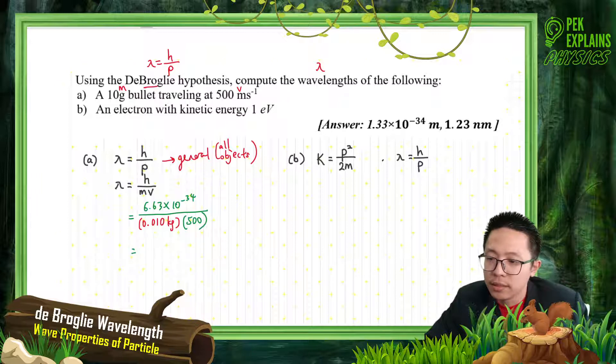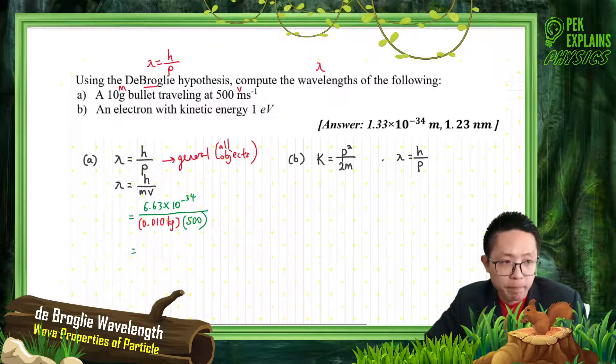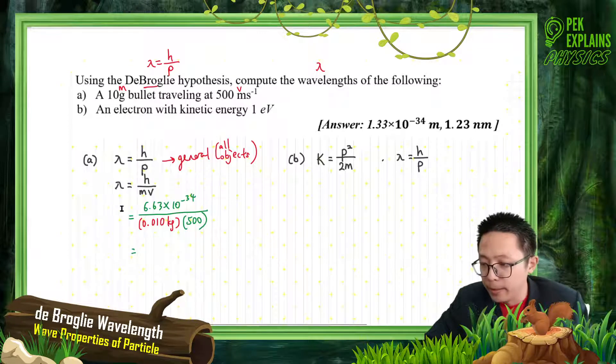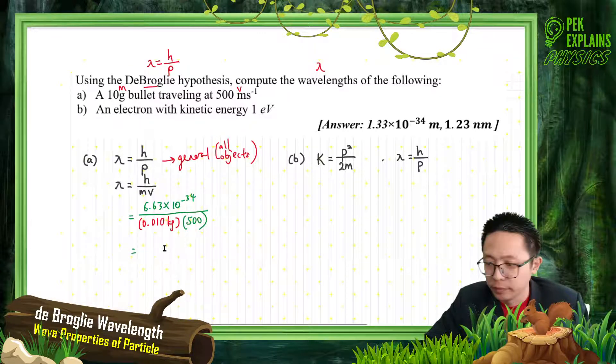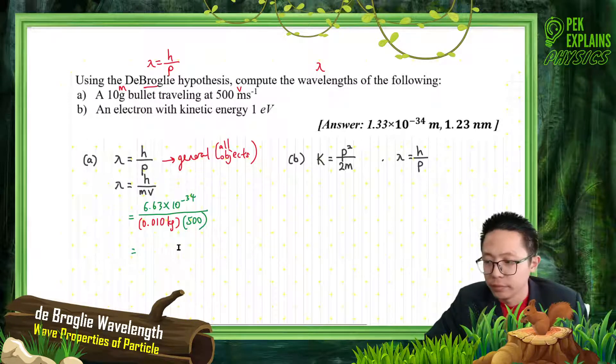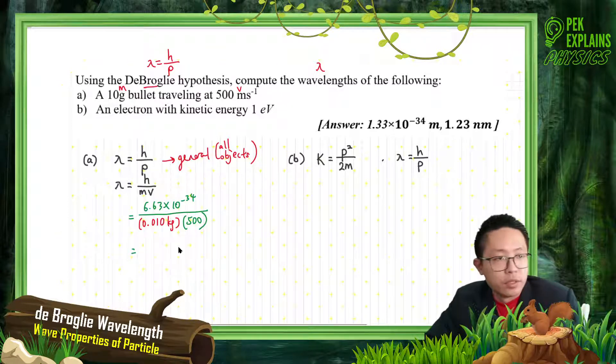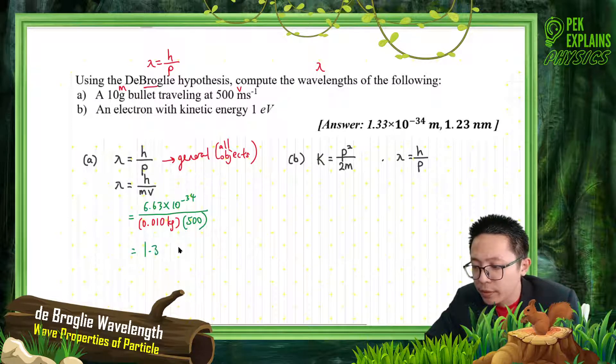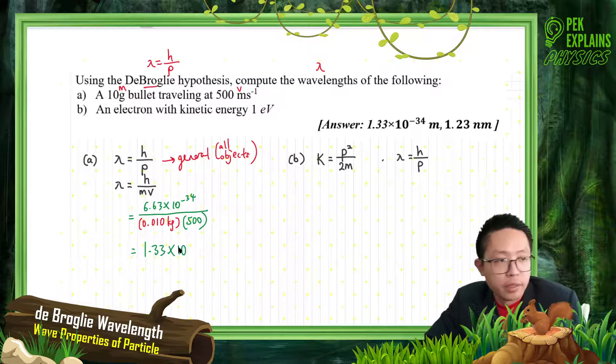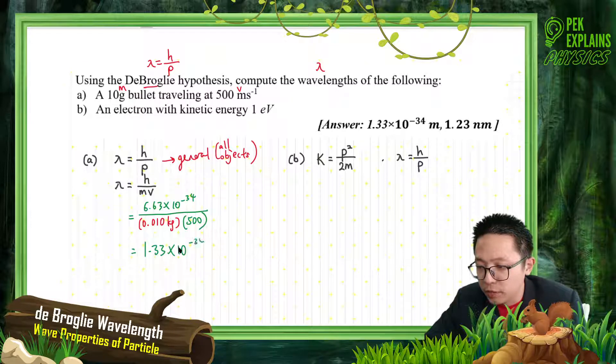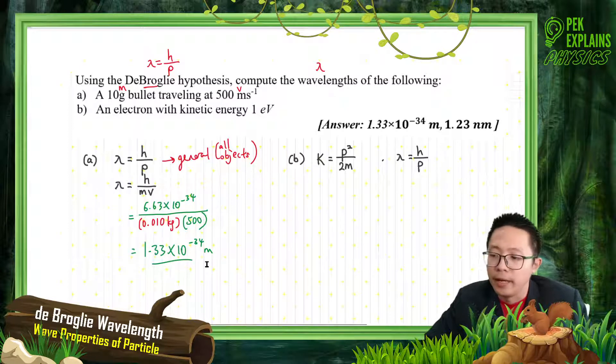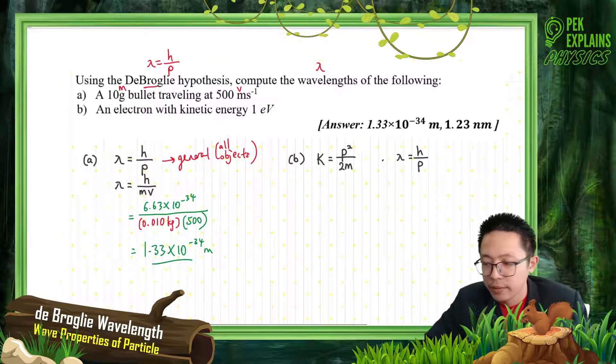What is the answer I will get? Let me look at the answer. The answer is 1.33 exponent negative 34. Do you get the correct answer? Do you get this same answer? This is the wavelength.